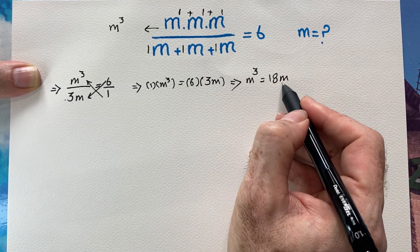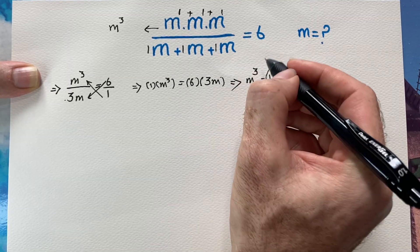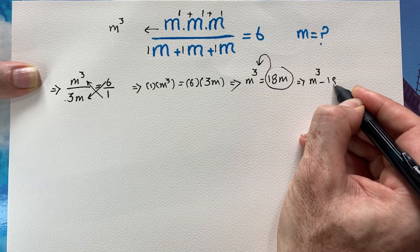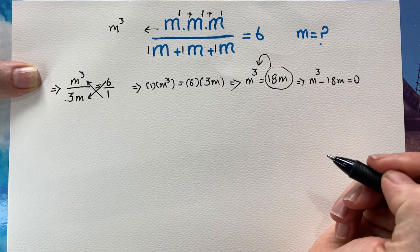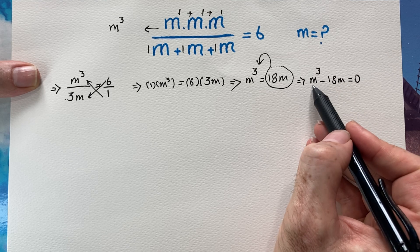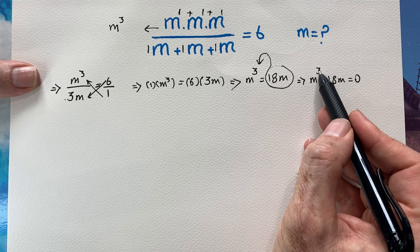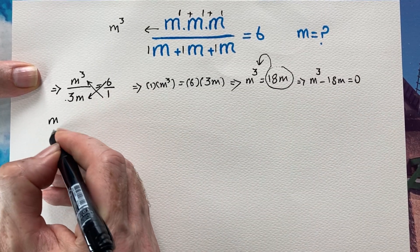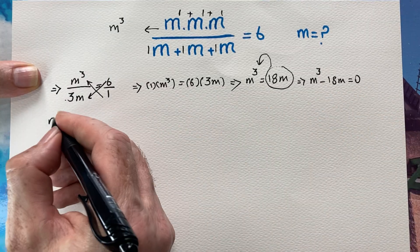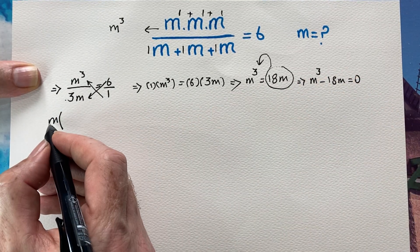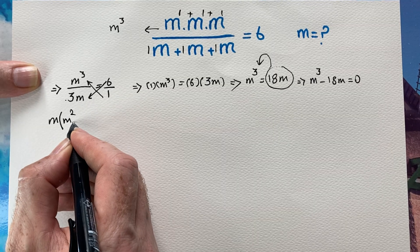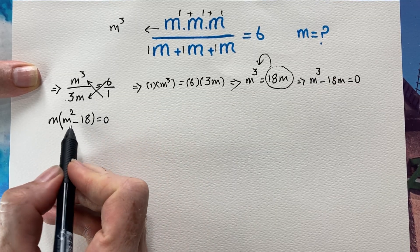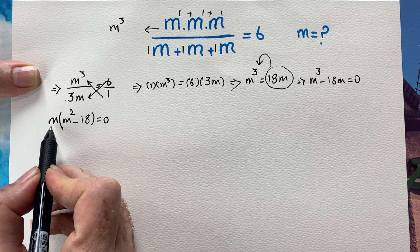Now I'm going to transpose 18m to the left-hand side, giving us m cubed minus 18m equals zero. To continue the solution, the common factor between m cubed and 18m is m. I factor m out of this expression: m times (m squared minus 18) equals zero.